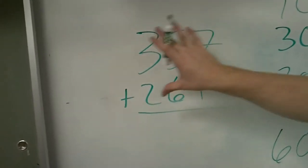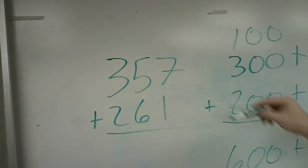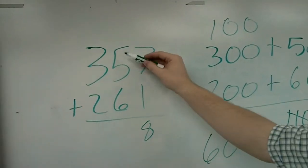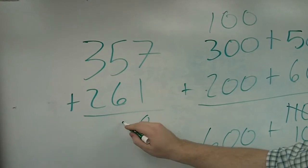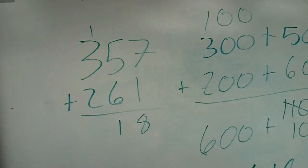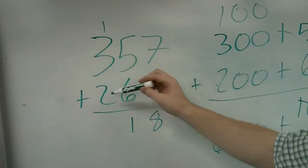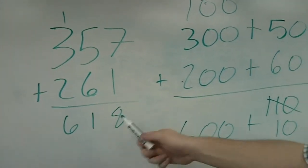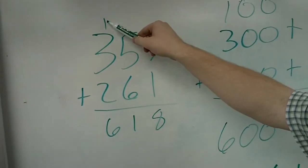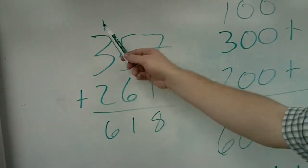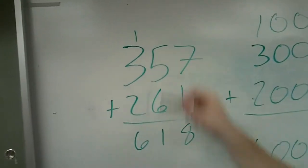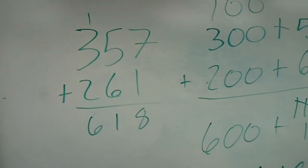Now we can do it the way you've been taught to show you the connections here. 7 plus 1 is 8. 5 plus 6 is 11, so we put 1, carry 1. 1 plus 3 plus 2 is 6, so we get 618. So when we take 1 from the tens column and move it to the hundreds column when we regroup that, we're really regrouping a hundred because that's in the hundreds column. So we get 618.